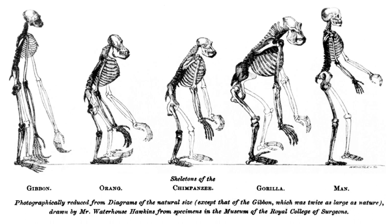Alternatively, other types of diversity may be assessed for organisms, including species diversity, ecological diversity, and morphological diversity. There are broad correlations between different types of diversity. For example, there is a close link between vertebrate taxonomic and ecological diversity.